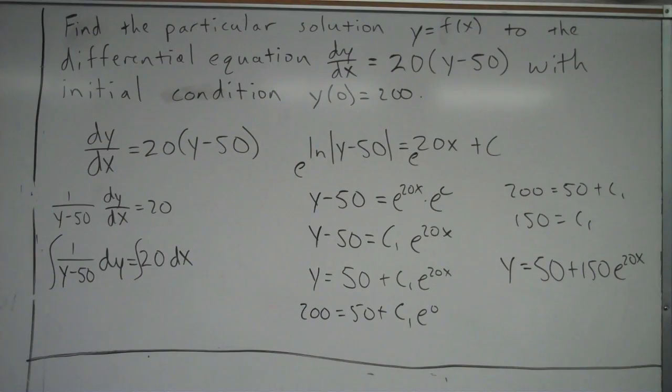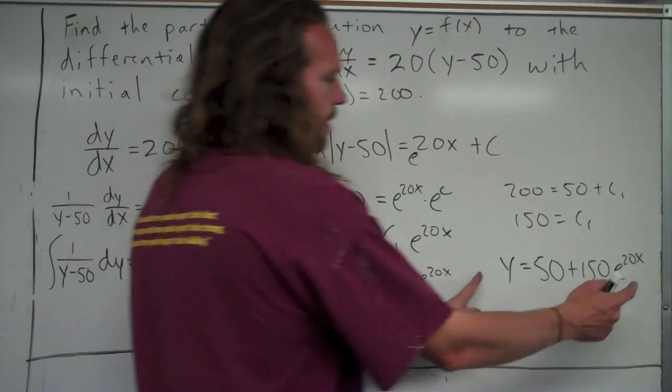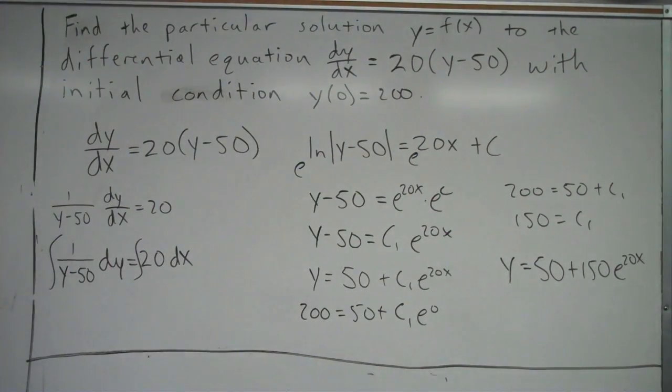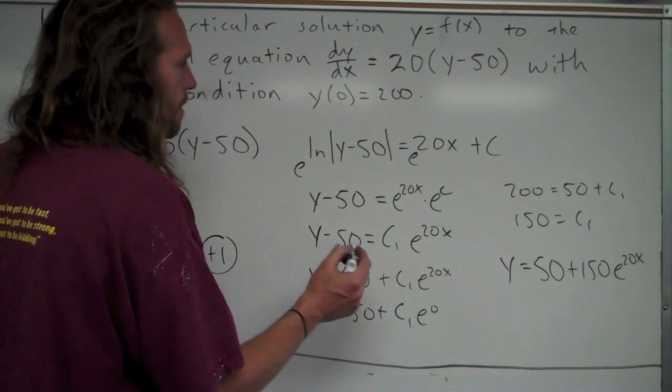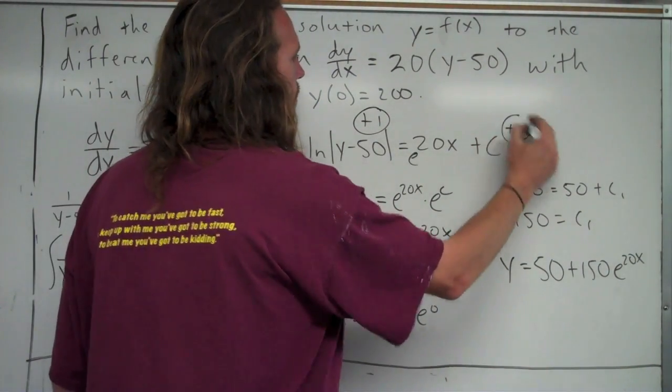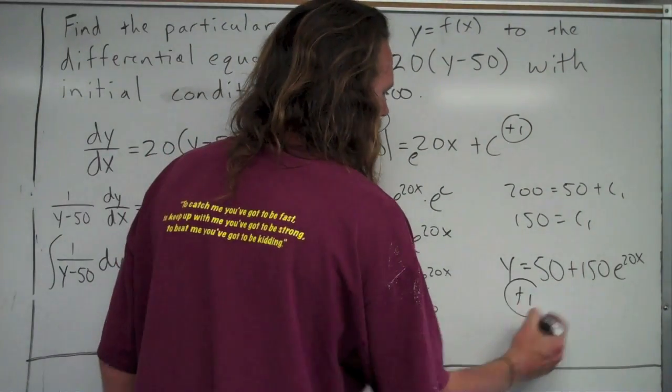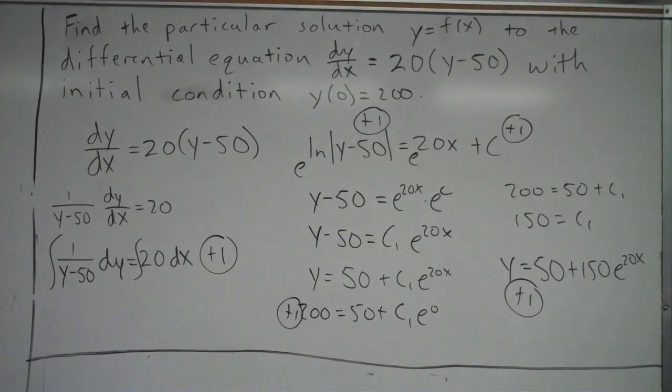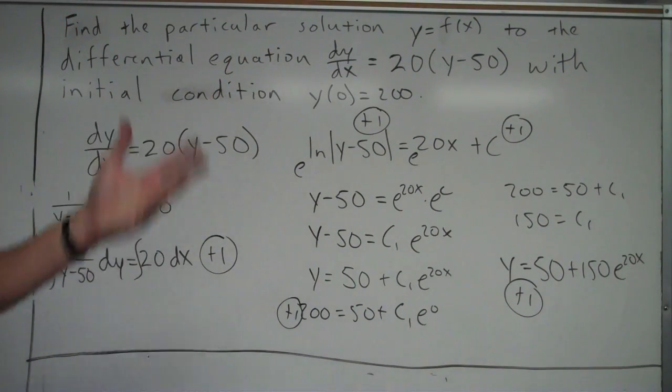The final points right there would come from using my initial condition. I've got a point for using my initial condition and then my final answer point having it solved for y and having everything correct. The point breakdown: plus 1 for separating the variables, plus 1 or sometimes 2 for the antiderivatives, plus 1 for putting plus c, plus 1 for using my initial condition, and another plus 1 for my final answer point. I solved the differential equation, which means finding the original function.